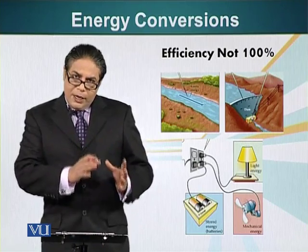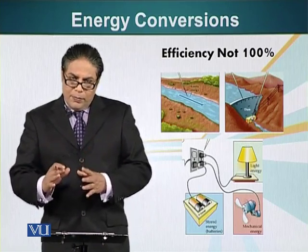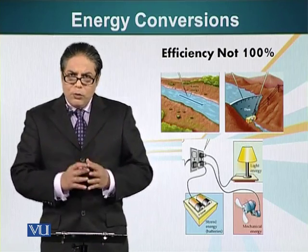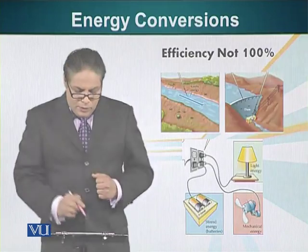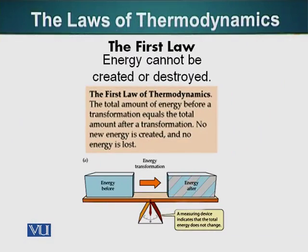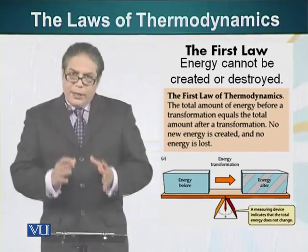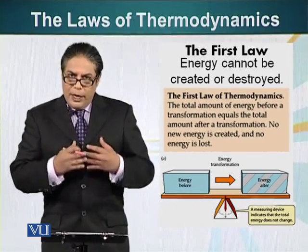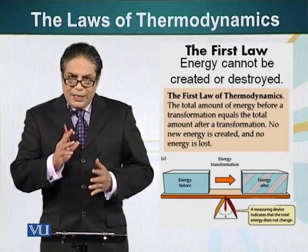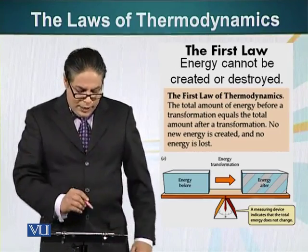So energy can be converted from one form to another. What are the rules that dictate energy conversions? The first law of thermodynamics states that energy cannot be created or destroyed. However, energy can be transformed from one form to another, but no new energy can be produced and it cannot be destroyed. That's the first law of thermodynamics.